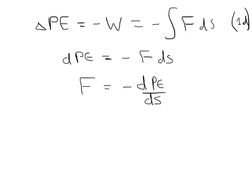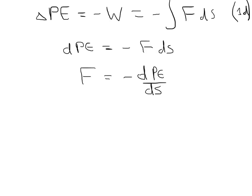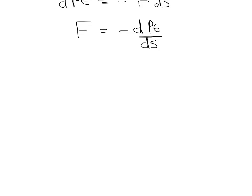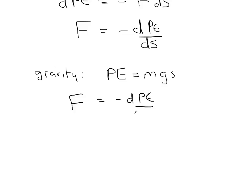This has some really interesting implications. Let's work it out for a couple of examples. The simplest one is gravity, where potential energy equals mgh, or mgs for convenience. The force for gravity is minus dPE/ds. When you take the derivative of mgs with respect to s, it becomes minus mg. So our expression for potential energy, when you take the derivative with respect to position, gives us the force of gravity acting on an object.